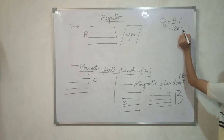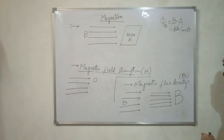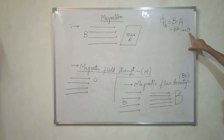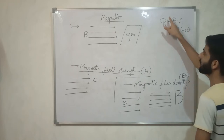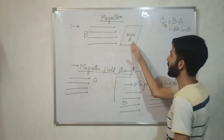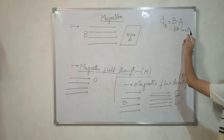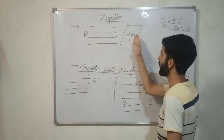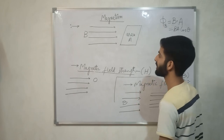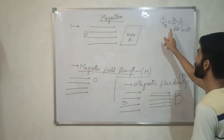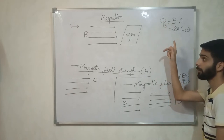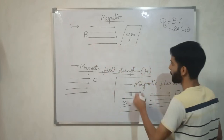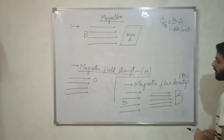When the angle between B and A is 90 degrees, the flux will be minimum. The flux will be maximum when the angle between this sheet and the magnetic field is zero. So, done with this — come to the next section.